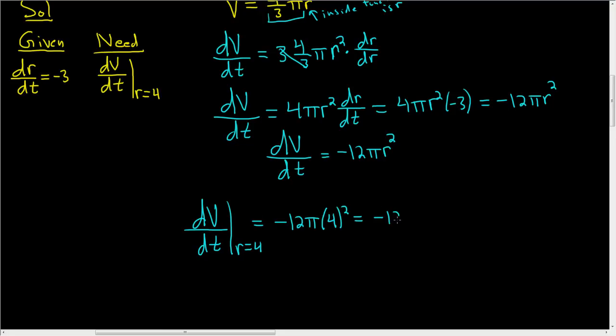So negative 12 pi times 16. 16 times 12 is negative 192, so we end up with negative 192 pi. The units were inches, and this is volume, so this is inches cubed per hour.